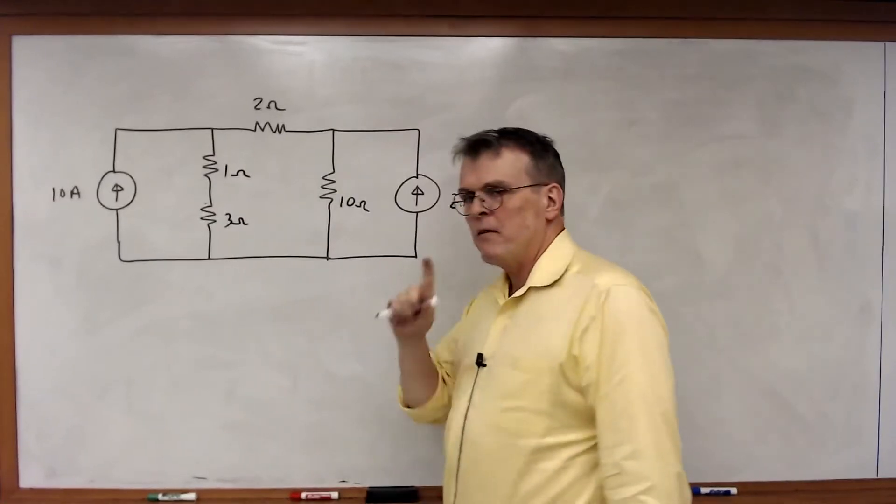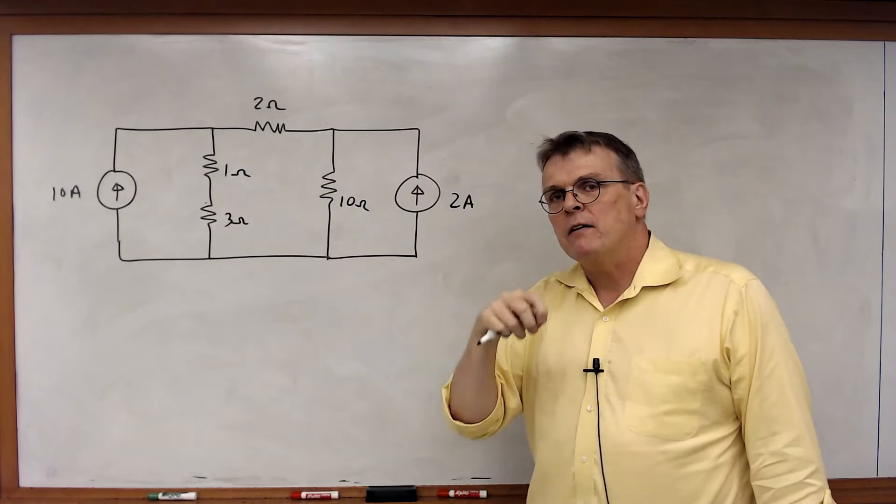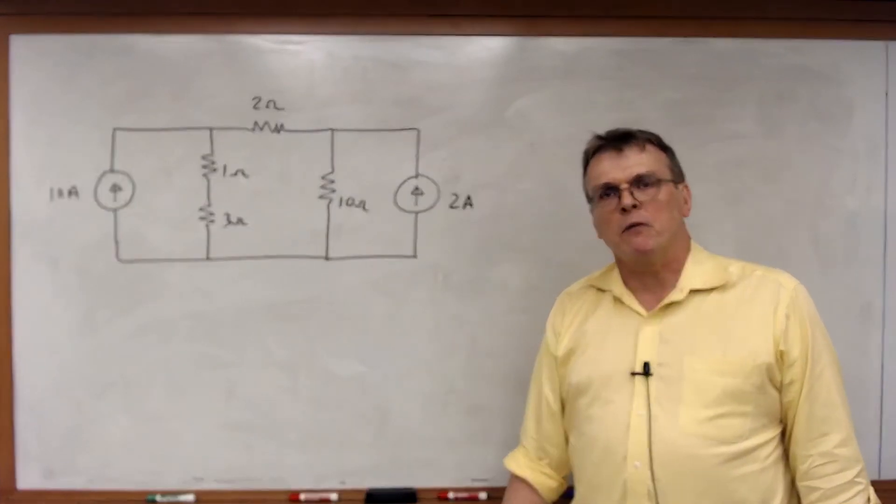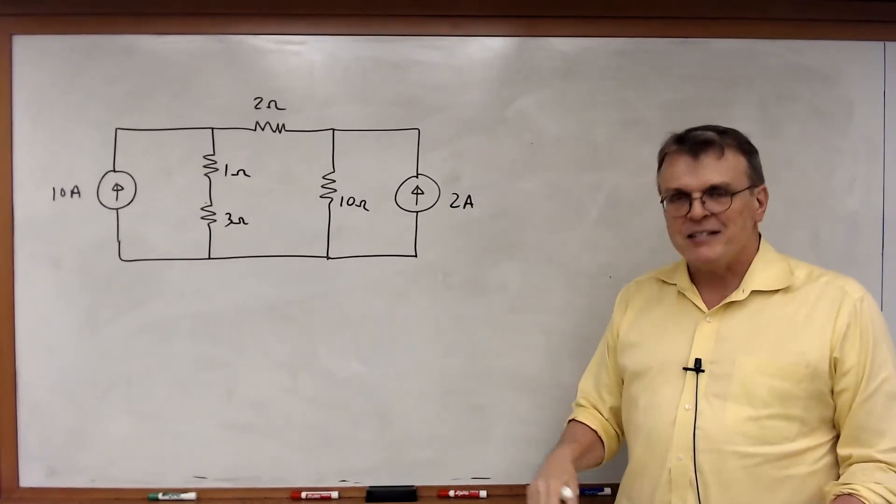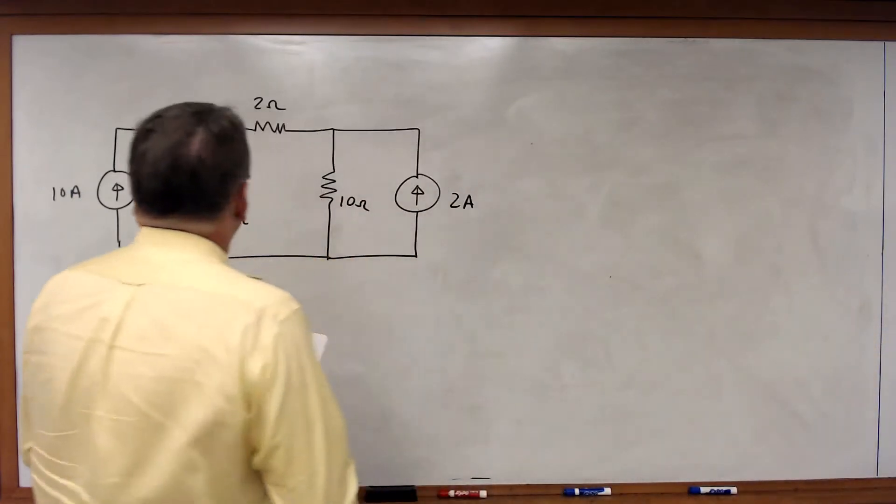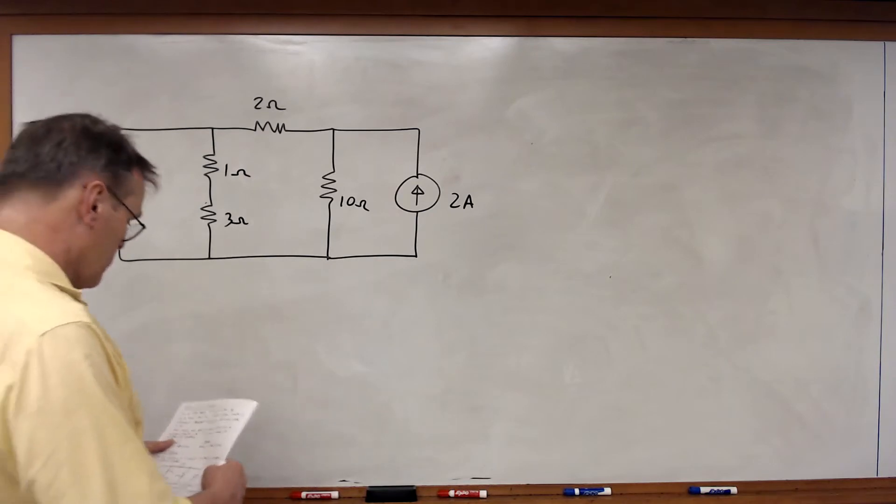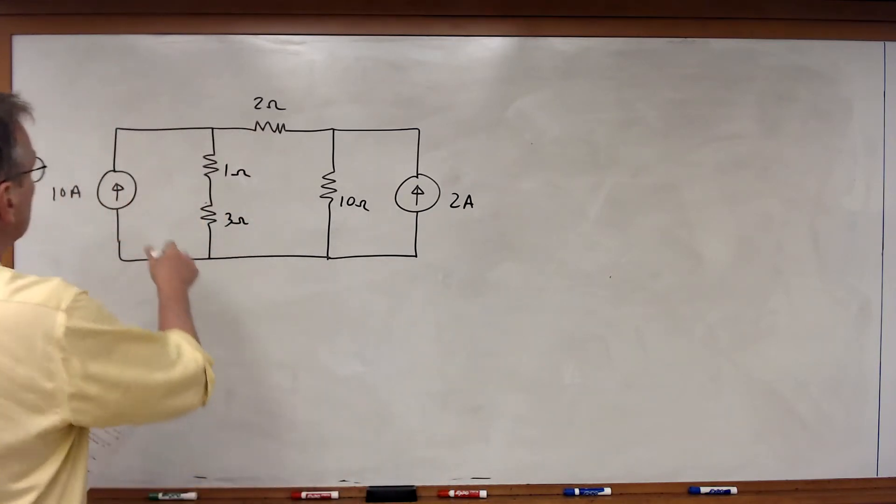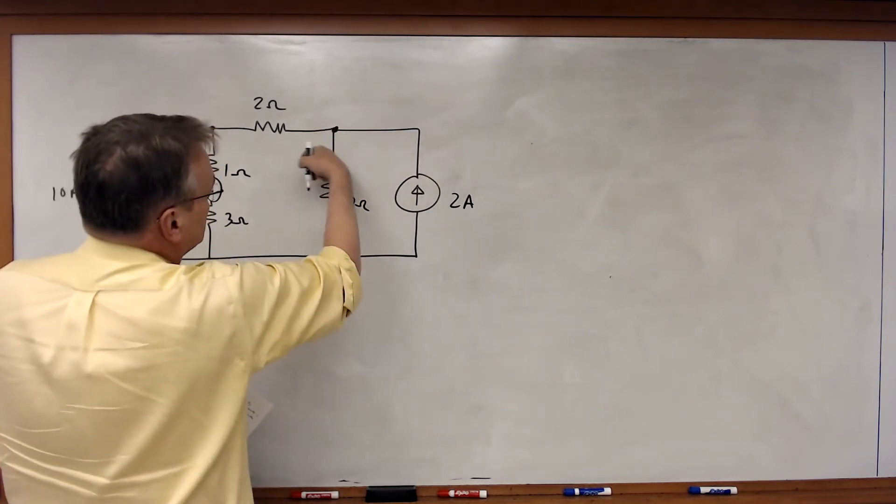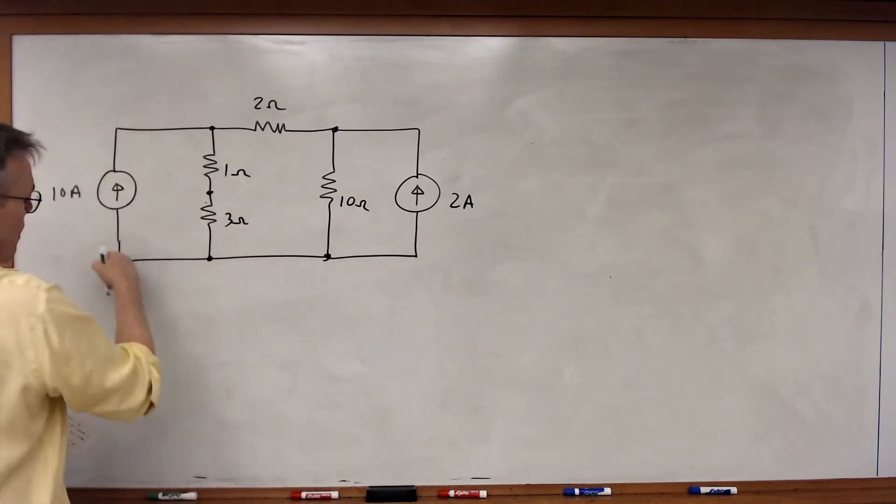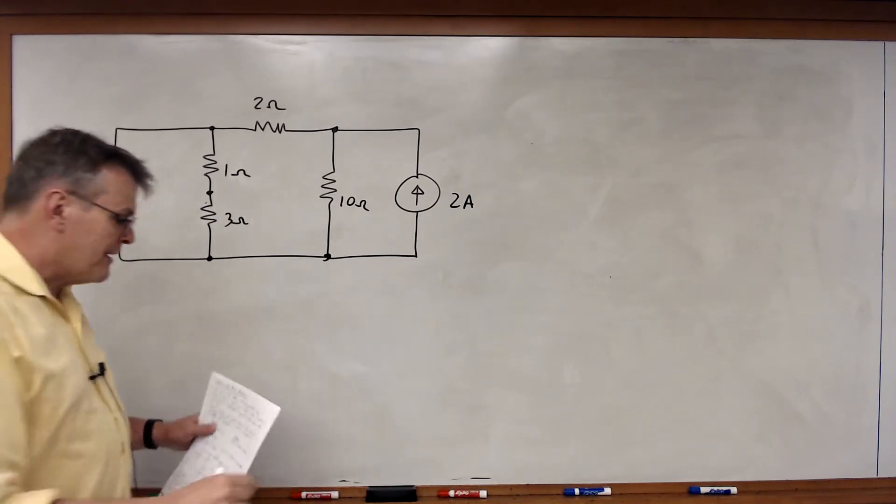The idea behind nodal analysis is very simple. If we've got a certain number of nodes, we can only write that number of nodes minus 1 KCL. One node will be left over. So let's take one node in this circuit and let's give it an arbitrary value, and the idea behind this is the ground or reference node. I'm going to look at the circuit, take one of the nodes, and I am going to declare that to be the ground or the reference node.